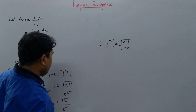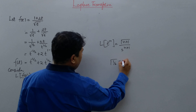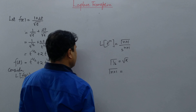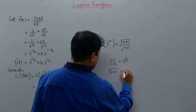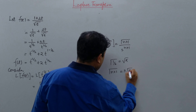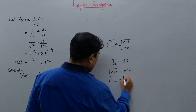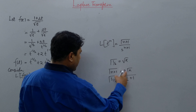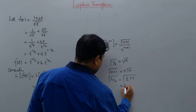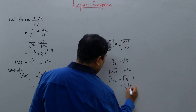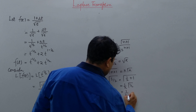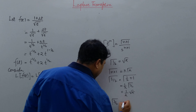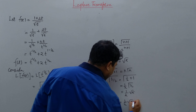Now we can simplify Γ(3/2). We know Γ(1/2) = √π, and the property of the gamma function that Γ(n+1) = n·Γ(n). So Γ(3/2) = Γ(1/2 + 1) = (1/2)·Γ(1/2) = (1/2)·√π. Therefore Γ(3/2) = (1/2)√π.